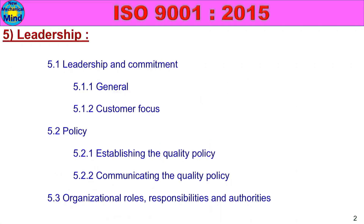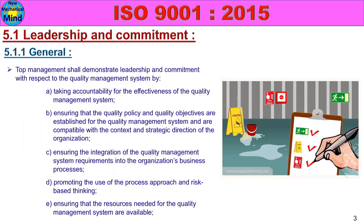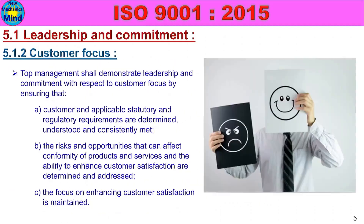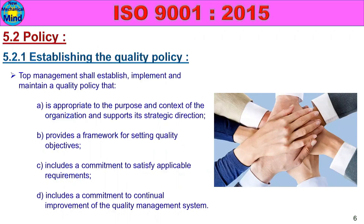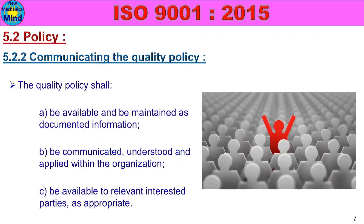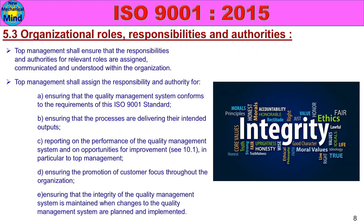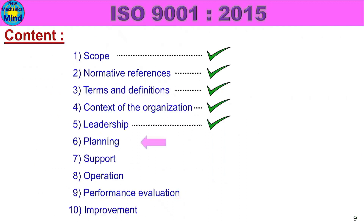In the next part, we will see leadership subclasses: general, customer focus, establishing the quality policy, communicating the quality policy, organizational roles, responsibilities and authorities. This part is detailed. In this part, we will see planning — that is Clause 6 — in detail.